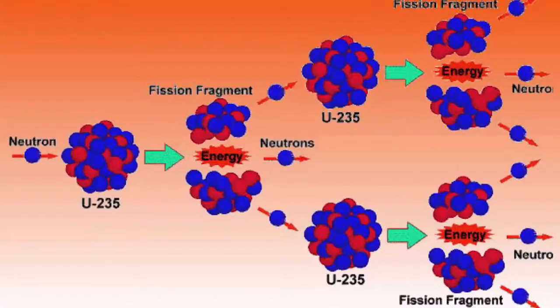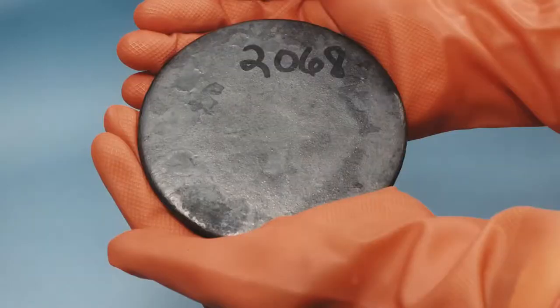There is one single naturally occurring isotope on our planet with a very special ability: Uranium-235. If you hit it with a neutron, not only will it split apart, but it will create more neutrons. And those neutrons, if they hit another U-235, will cause it to split apart too, causing a nuclear chain reaction. This is the reason why we have nuclear power on this planet. U-235 is a rare isotope — about 0.7% of naturally occurring uranium. Uranium-238 is much more common and much more stable.